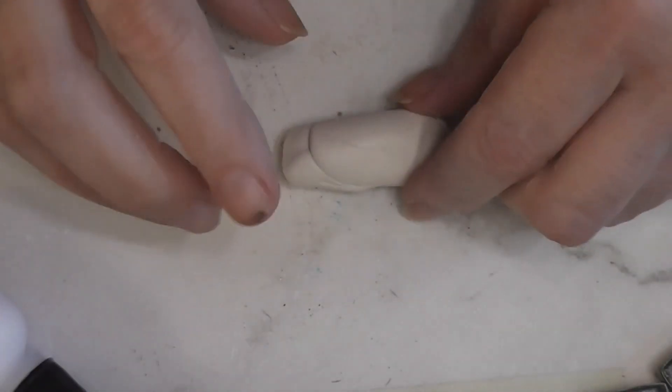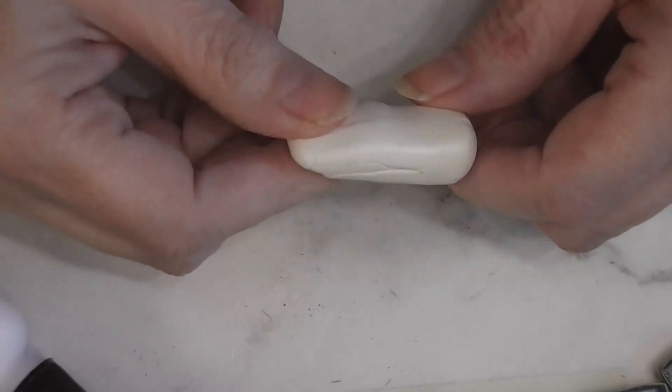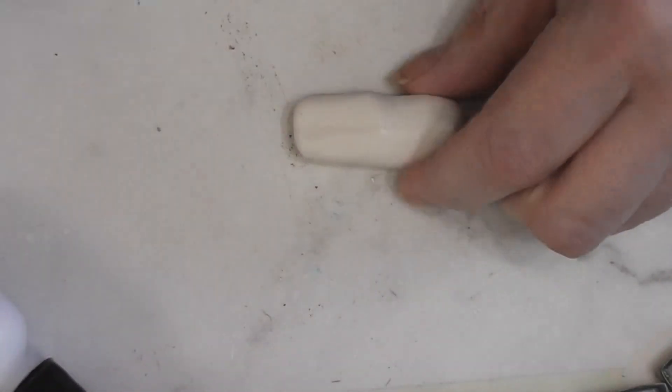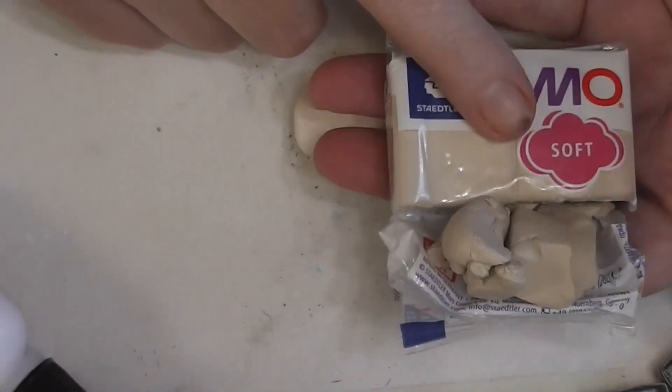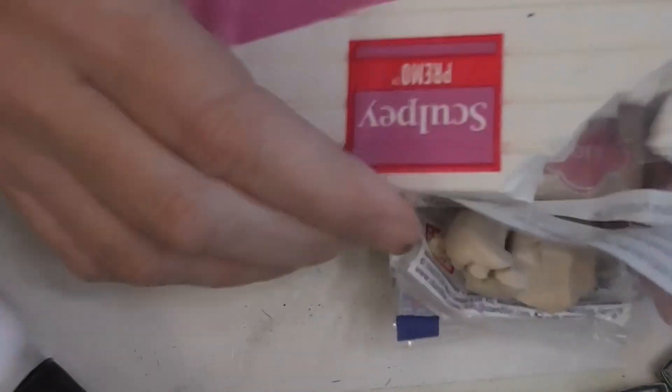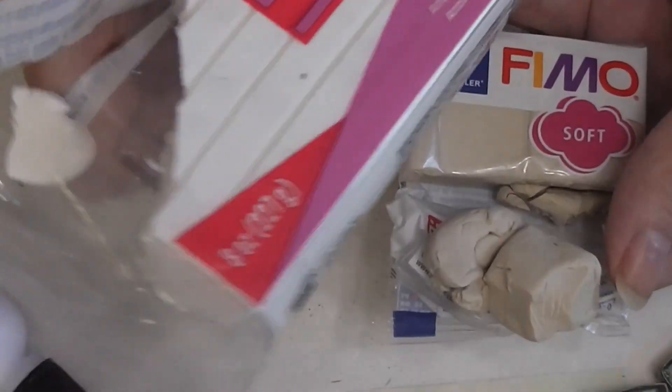All right, so today we are going to start with our clay mixture. I've mixed this off-camera because it took a while to get it blended together and get the right color. What I've got is approximately one part Fimo Sahara, which is just a light beige, and four parts of Sculpey Primo in white.